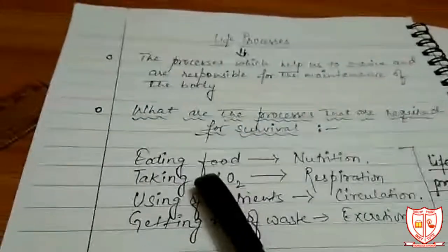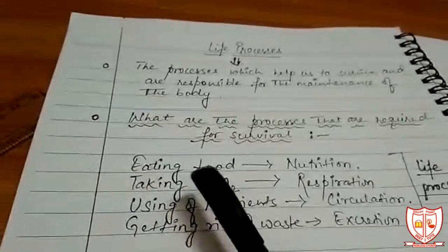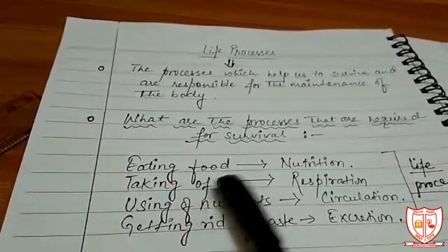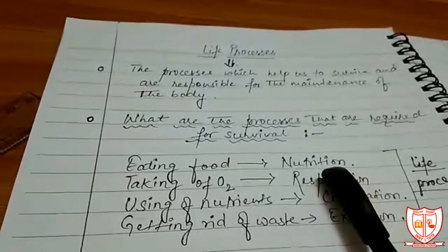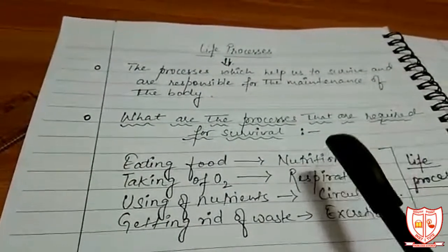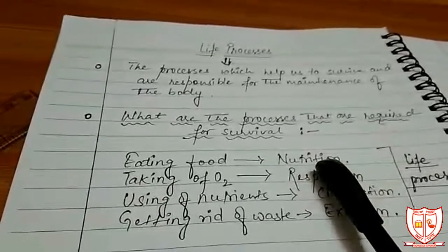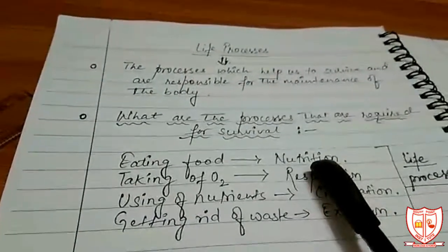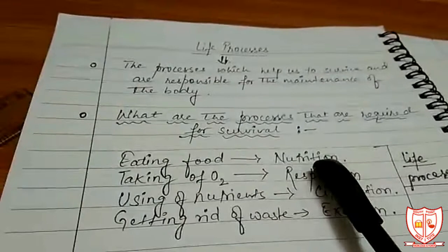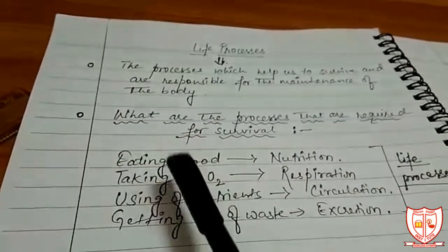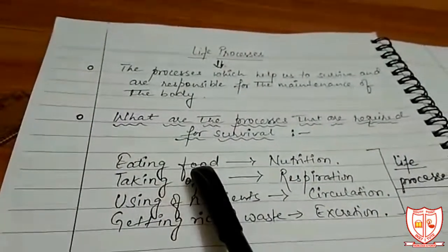The very first thing we know is eating food. We cannot survive without eating food. Providing nutrition to our body is very important because nutrients give us energy, they build our body for growth, and also protect us from many diseases. So eating food is the very first important life process.